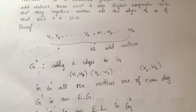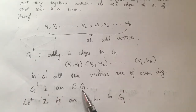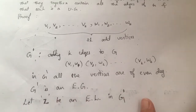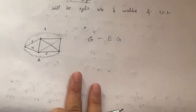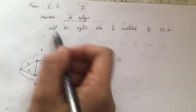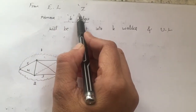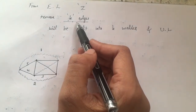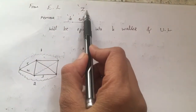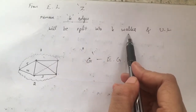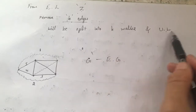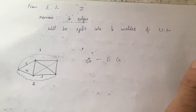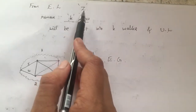Earlier graph G had 2k odd vertices, but after adding k edges, the new graph G dash is a graph with all even-degree vertices. We know by the definition of an Euler graph that if a graph has all vertices of even degree then it is an Euler graph. So G dash becomes an Euler graph, and it must contain some Euler line. Let z be an Euler line in G dash.